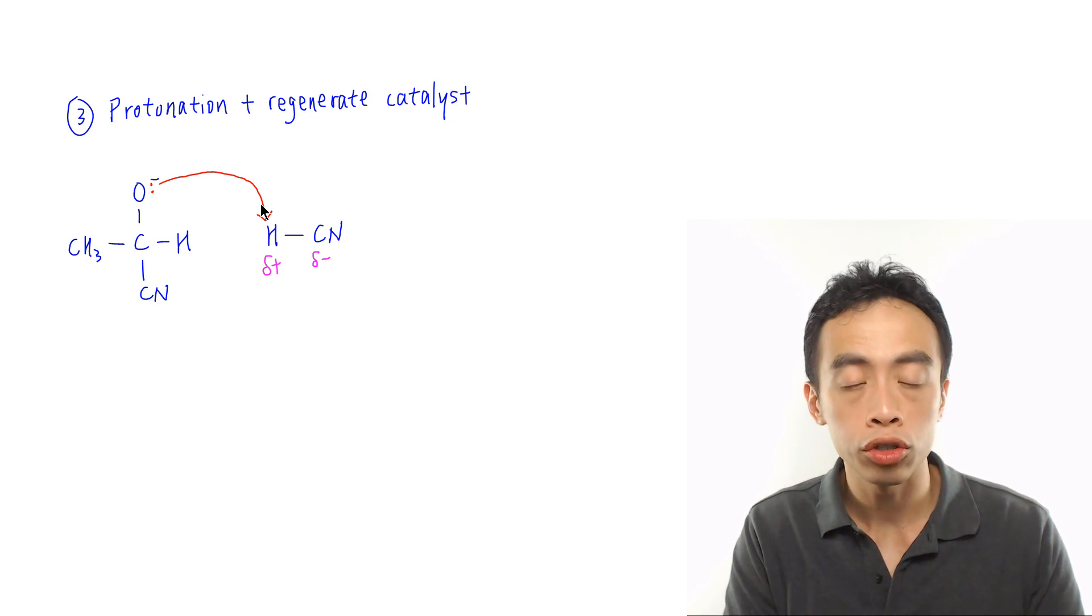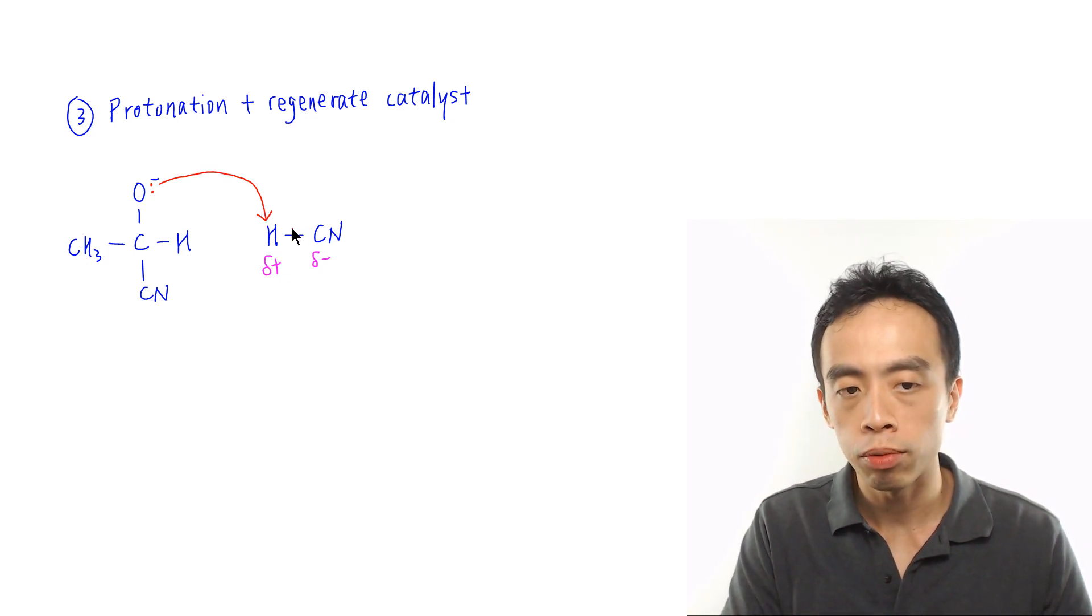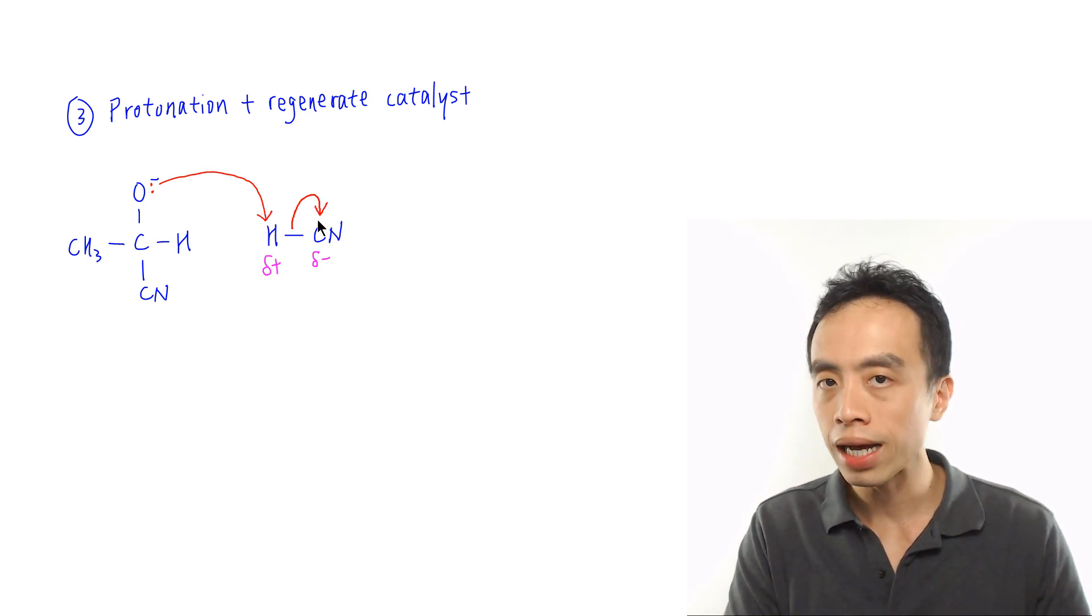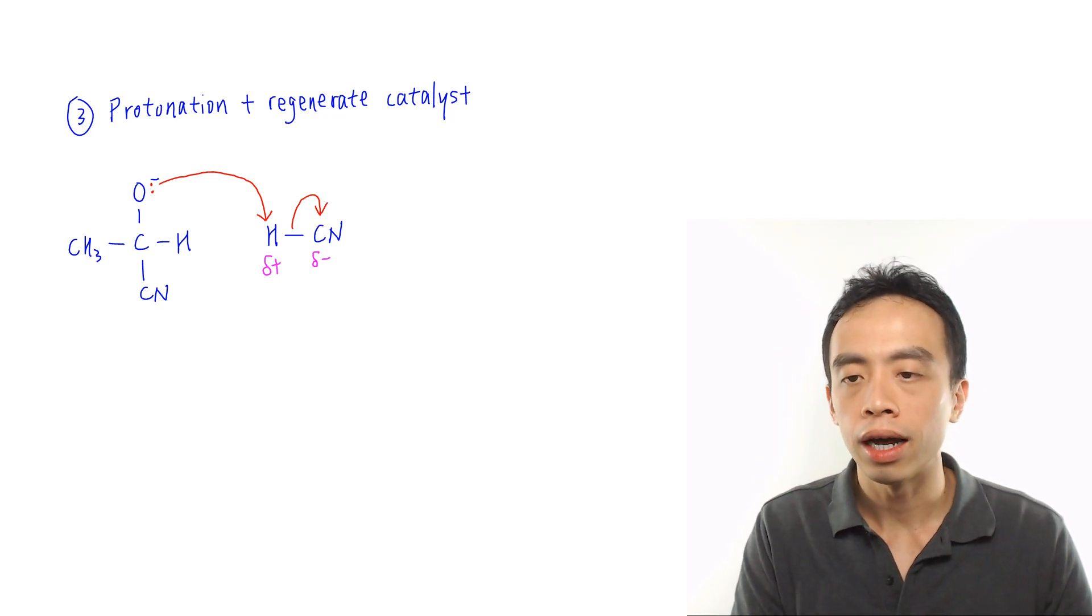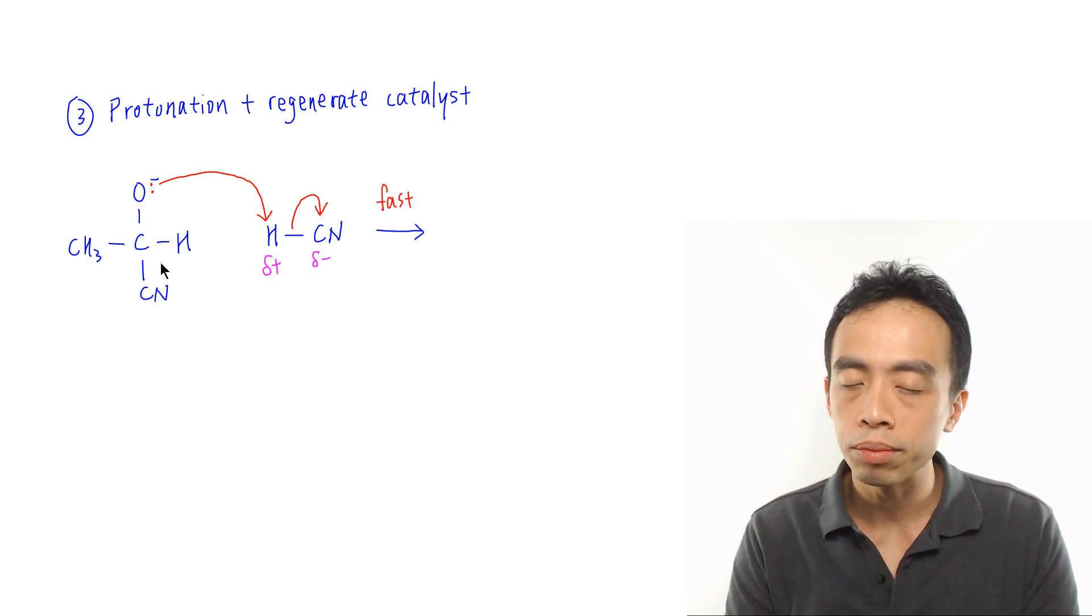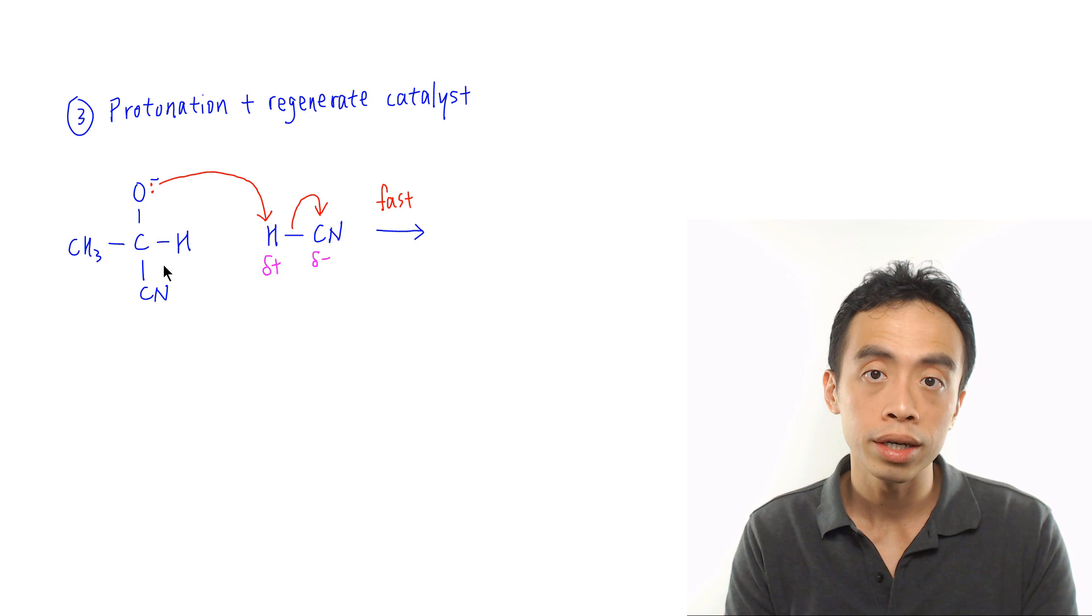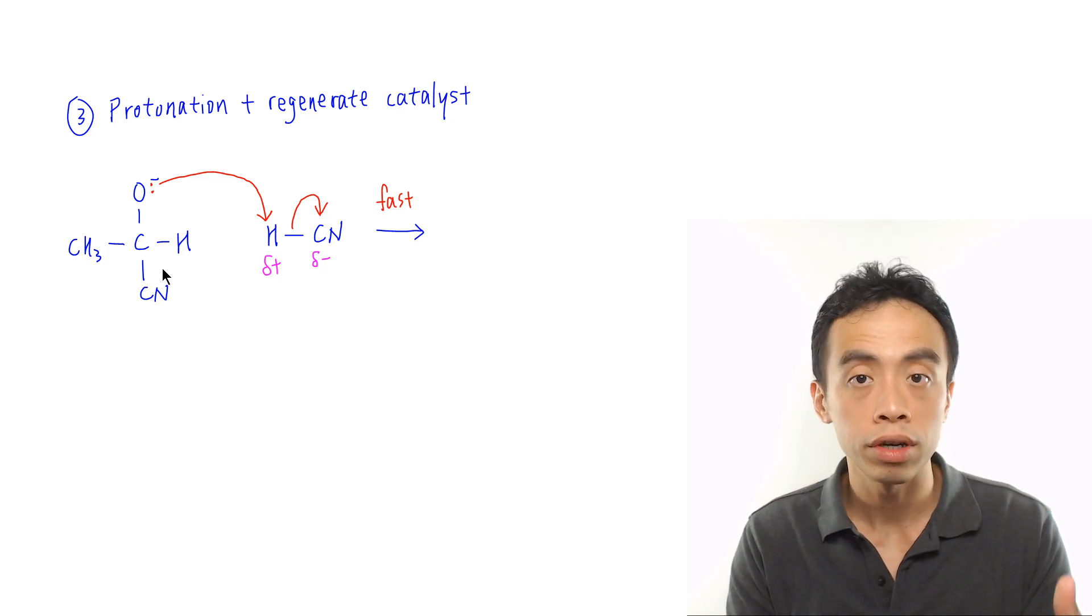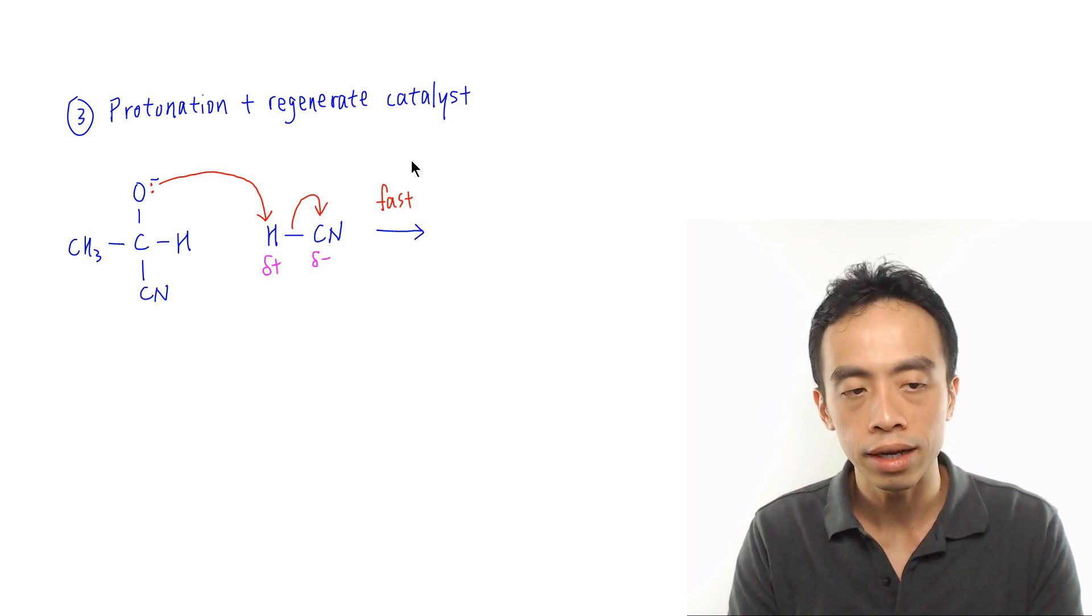Then this CH bond will break, both electrons will go to carbon. So later I'll form a CN⁻ here. This step will be the fast step because this intermediate is highly unstable. So you trigger this protonation very readily.